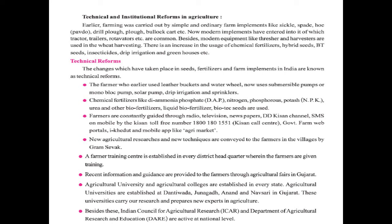Farmers are constantly guided through radio, television, newspaper, DD Kisan channel, SMS, or mobile by the Kisan toll free number 1800-180-1551, known as the Kisan call center. Government farms, web portals, e-kharats, and mobile apps like Agri Market are also available. We can understand that the agriculture sector is now moving toward digital platforms where farmers are getting many facilities.